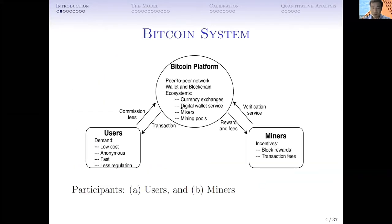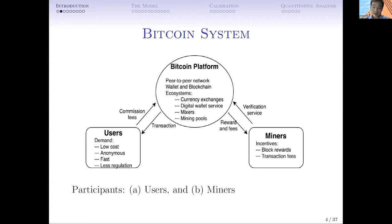Bitcoin is a payment system with a peer-to-peer network. There are two groups of participants who play a very important role in this system. One is users - they pay commission fees and enjoy transaction services. Users use Bitcoin for certain reasons, such as the low cost of transactions, the anonymous feature, fast transactions, and less regulation. The other group is miners. Miners provide verification service by validating transaction orders submitted by users, and for their hard work, they get compensated in two ways: block rewards and transaction fees.